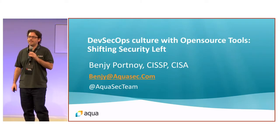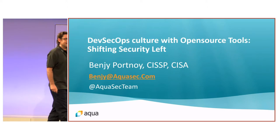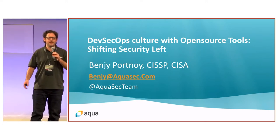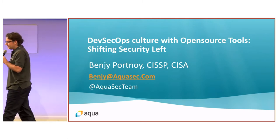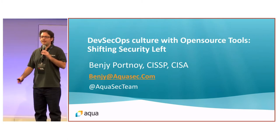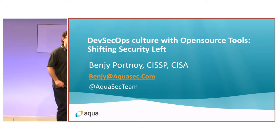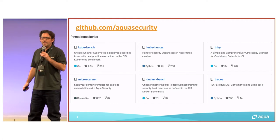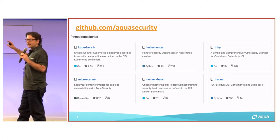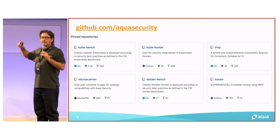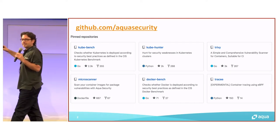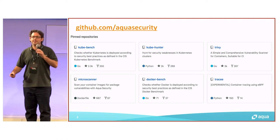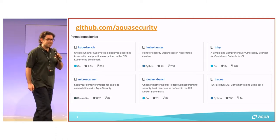My goal in the next 14 minutes and 48 seconds is to share with you some really great open source tools that you can use to enhance the security posture of your cloud-native applications. Aqua was founded four years ago specifically to address the challenges around cloud-native security. If there's one thing I want you to remember from this presentation, it is our GitHub page. I'm going to try and cover four of the six projects available there, and hopefully these will help you enhance the security posture of your cloud-native workloads.